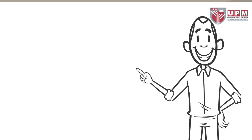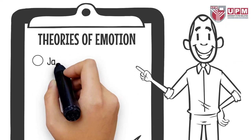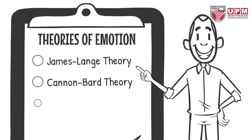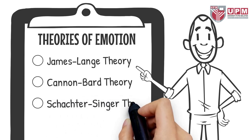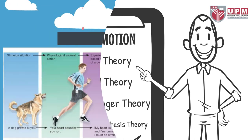Theories of emotion: number one is James-Lange theory; second, Cannon-Bard theory; number three is Schachter-Singer theory; and number four, facial feedback hypothesis theory.